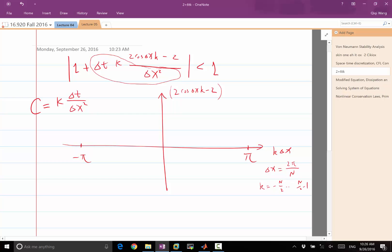Now 2 cosine minus 2. Cosine of k delta x ranges from 1 to minus 1, so 2 times this minus 2, or I can write it 2 times cosine minus 1, is going to range from the maximum of 0.